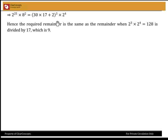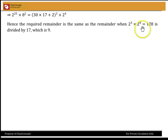Again, every term except the last will be divisible by 17. So it's the same remainder as when 2 cubed times 2 to the power 4 is divided by 17 — that's 2 to the power 7, which is 128. 128 divided by 17 gives remainder 9. So it's very straightforward — we've had to do a couple of steps here, more than the previous example.